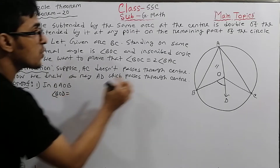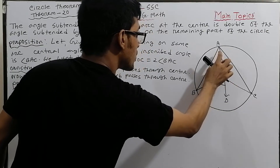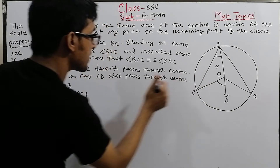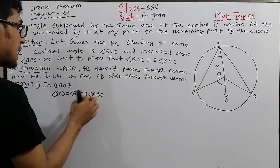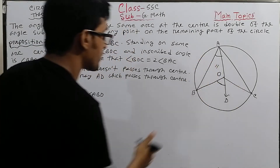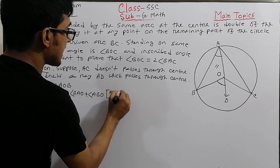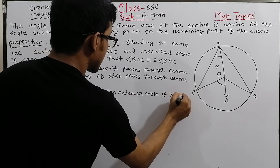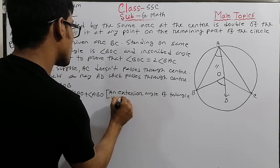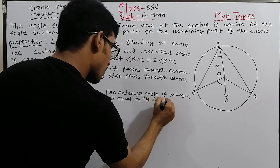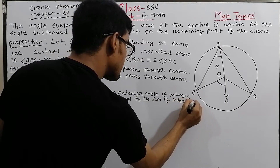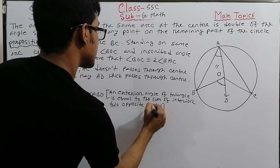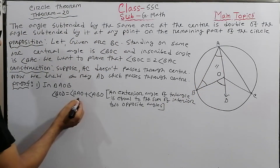Applying the exterior angle theorem: angle BOD equals angle BAO plus angle ABO. That is, the exterior angle BOD of triangle AOB equals the sum of the two opposite interior angles BAO and ABO.